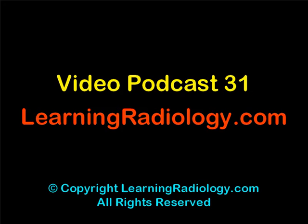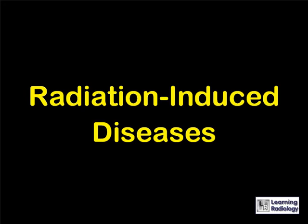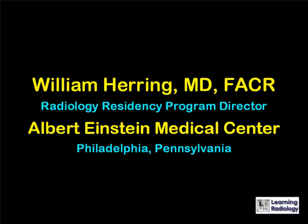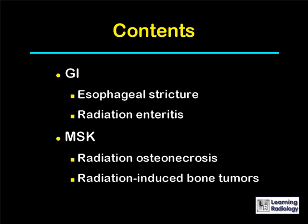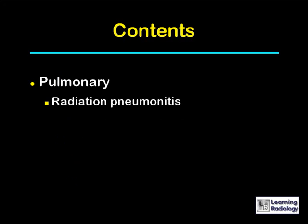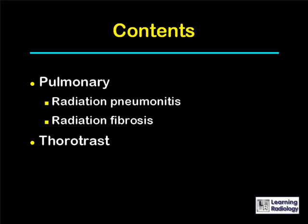This is Video Podcast 31 from LearningRadiology.com, on Radiation-Induced Diseases. I'm William Herring from Albert Einstein Medical Center in Philadelphia. Today we're going to talk about the effects of radiation on the GI tract in producing esophageal strictures and radiation enteritis, on the musculoskeletal system in producing radiation osteonecrosis and radiation-induced bone tumors, on the lungs in producing radiation pneumonitis and radiation fibrosis, and a little bit about Thorotrast.